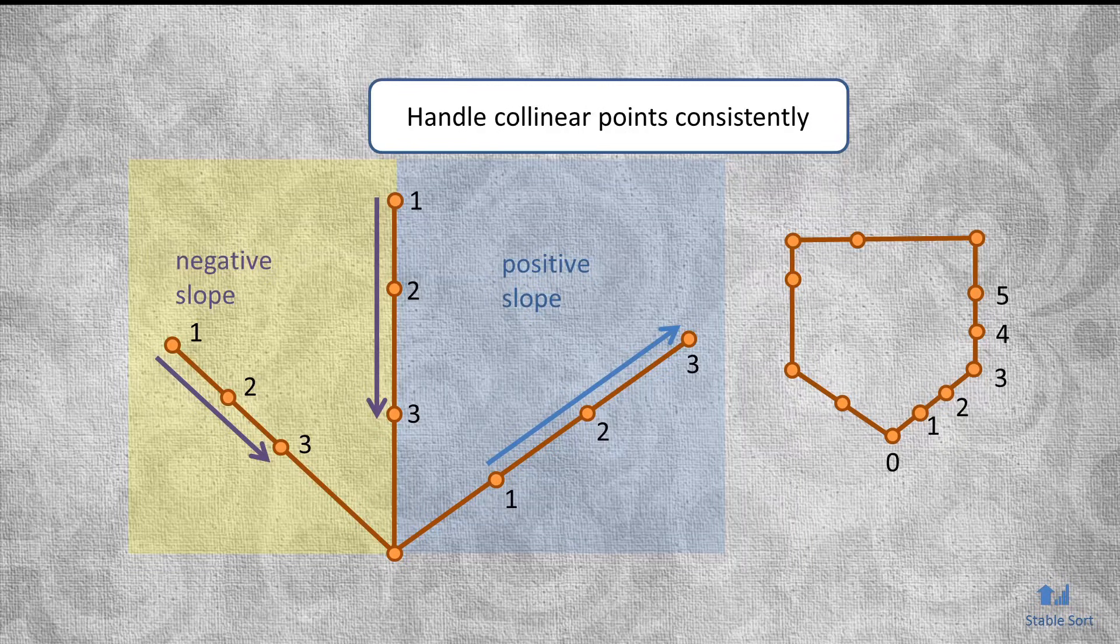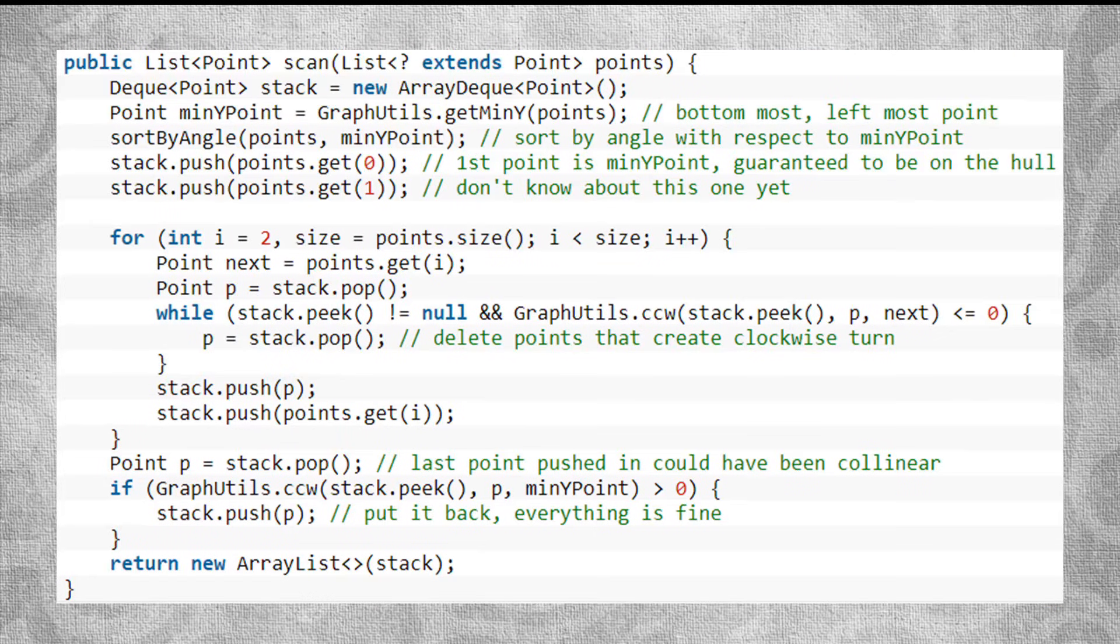This is a little tricky, especially when dealing with floating point coordinates. So take a look at the source code linked in the description. The first step of finding the lowest point on the y-axis takes order n, since it just needs to iterate over every point.